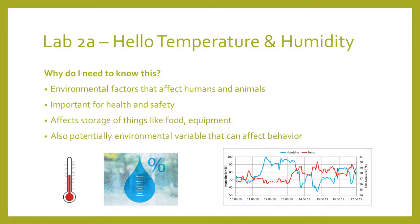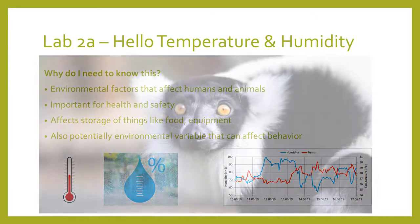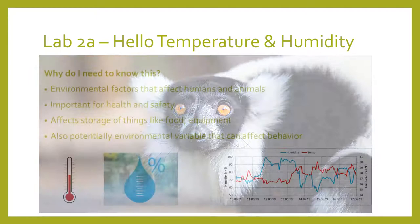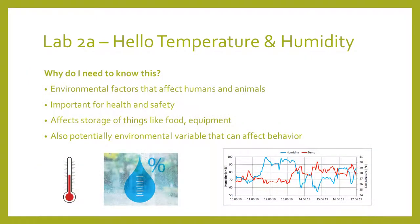Temperature and humidity are useful to gauge the health and safety of our living environment, as well as for animals and plants. For captive animals, it's important to constantly measure these parameters, since any deviation could negatively stress the animals. Temperature and humidity are also important to gauge storage environments for things like food and equipment. Storing dry foods in high temperature and humidity environments negatively affects their shelf life, and storing sensitive equipment in high humidity environments could accelerate corrosion and affect measurements.